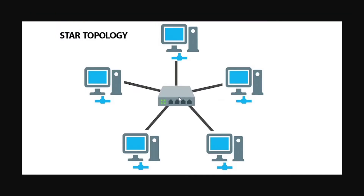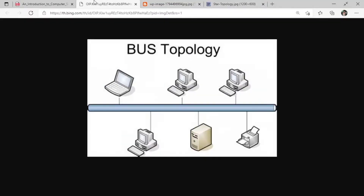In star topology, there is one central device known as a hub, through which all other computers are connected. If something happens to a computer, the other computers will still be working. But if something happens to the hub, then the entire network will get disturbed. The advantage is that when one computer gets disconnected, all others keep working. The disadvantage is that if the central device gets disconnected, the whole network will get disconnected.